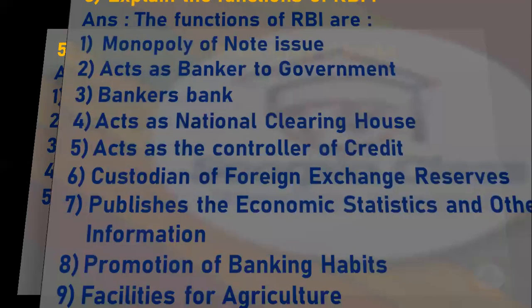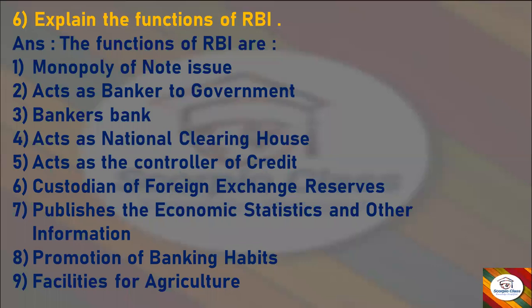Next question: Explain the functions of RBI, that is Reserve Bank of India. Answer: The functions of RBI are — monopoly of note issue, acts as a banker to the government, it is a bankers' bank, acts as national clearing house, acts as the controller of credit, custodian of foreign exchange reserves, publishes economic statistics and other information, promotion of banking habits, and facilities for agriculture. These are the functions and role of the Reserve Bank of India.